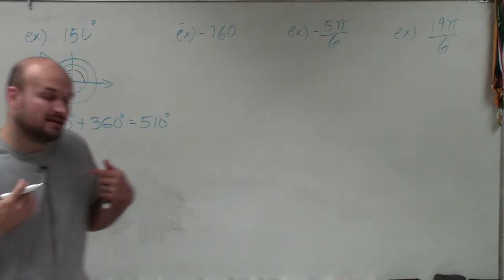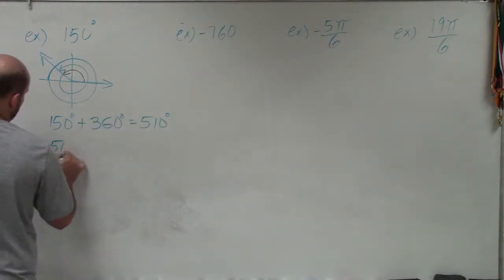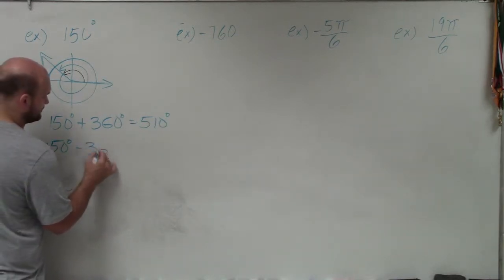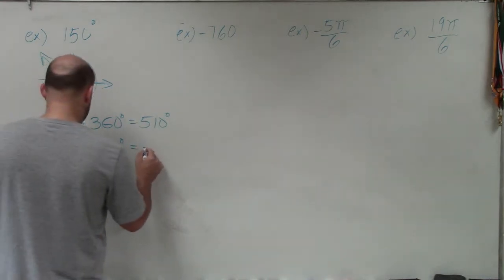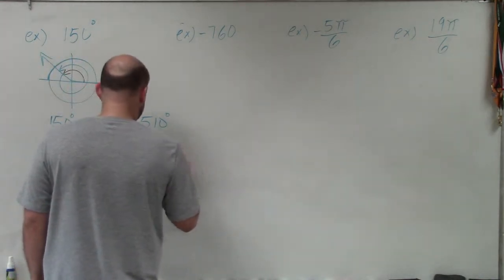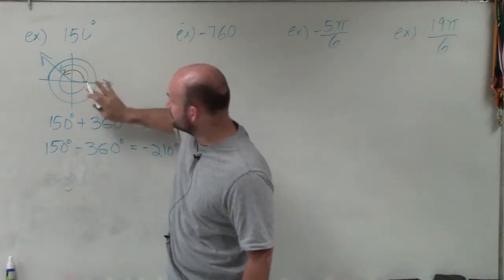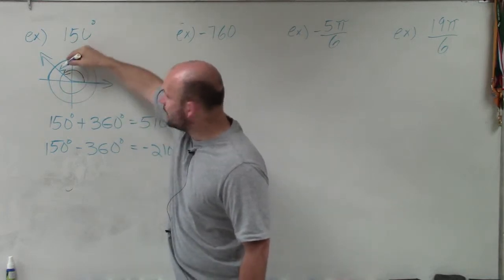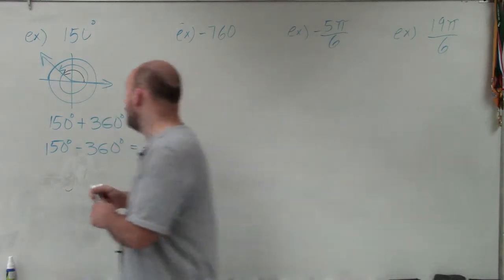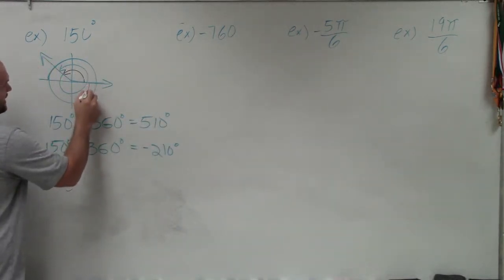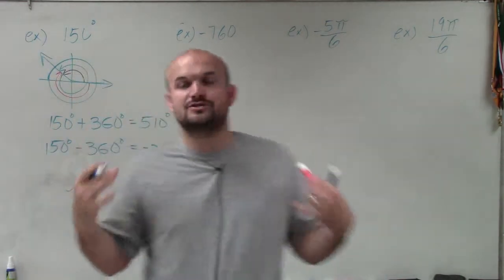If I want to find a negative coterminal angle, then I'm simply going to take 150 degrees and subtract 360 degrees, and that is going to give me negative 210 degrees. So basically the black is my original angle, 150 degrees. I can go around 360 degrees to get 510, or I can go in the negative direction to get negative 210 degrees — both give the same angle with the same initial and terminal sides.